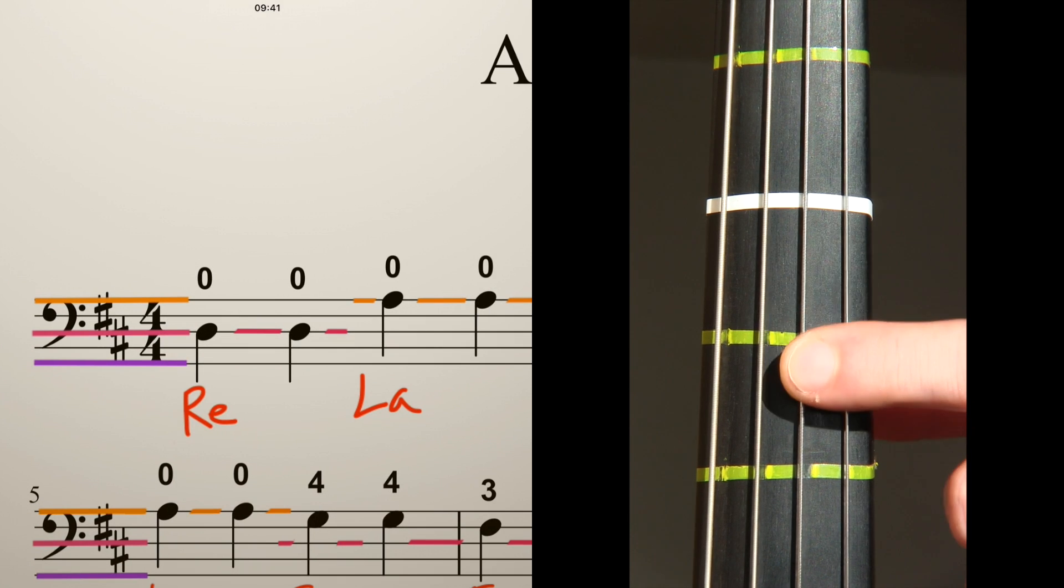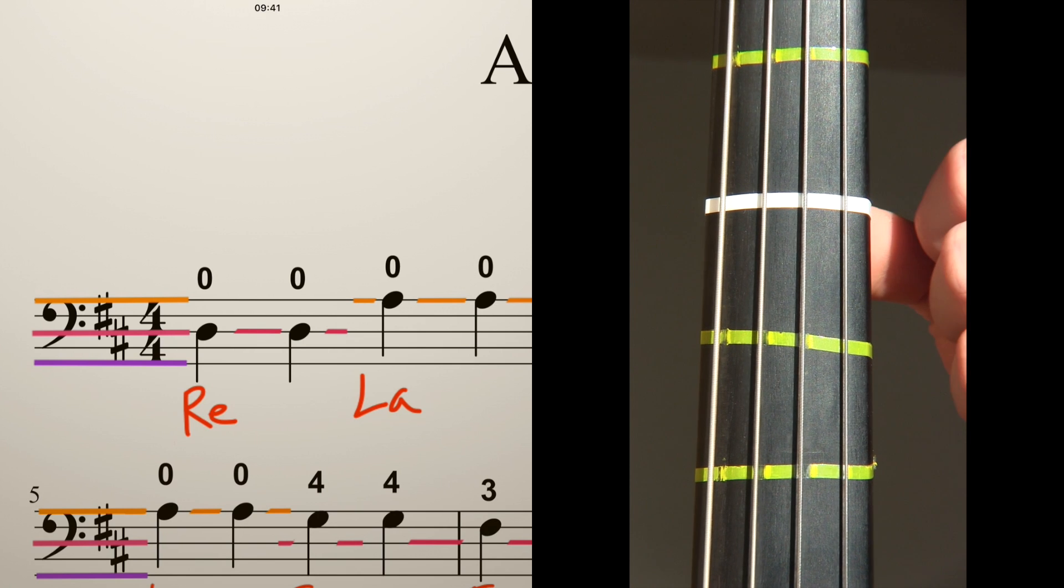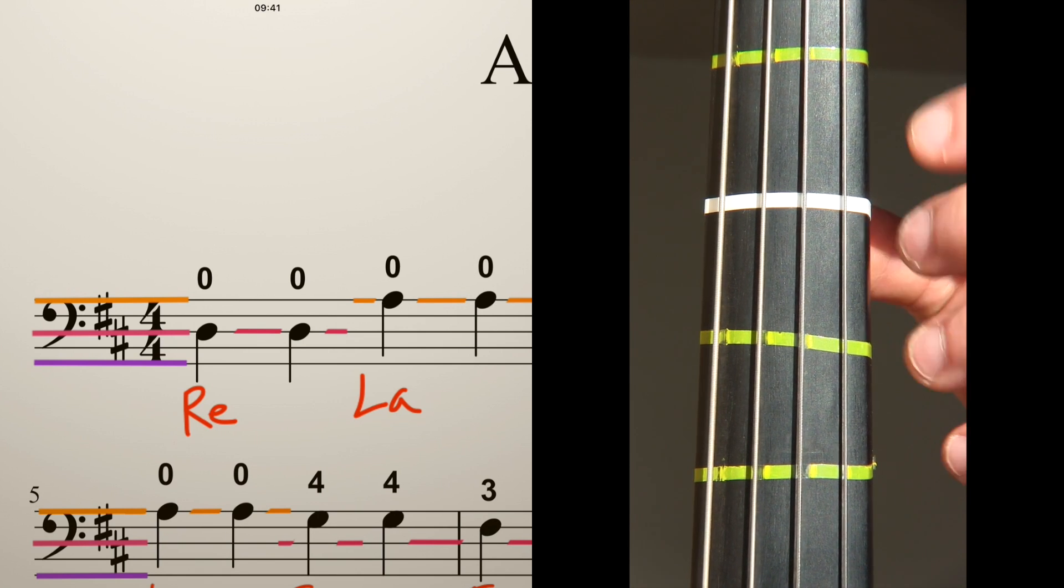We start on the D string, the second string here. Let's put our fingers ready. Thumb always right here. You have to see through my neck.